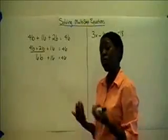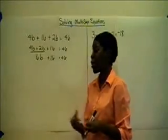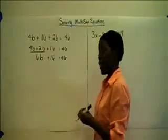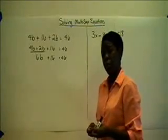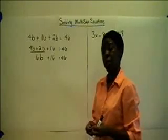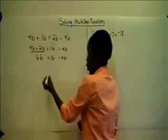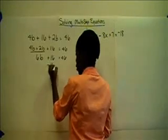And if you notice that once we combine our like terms, we have now a two-step equation. And we'll do the same as we've always done in solving equations. We're going to take the inverse of the opposite operation and perform that on both sides. So we're going to subtract 16 on both sides.